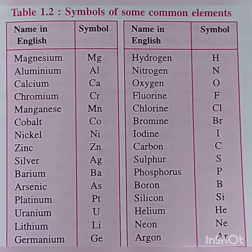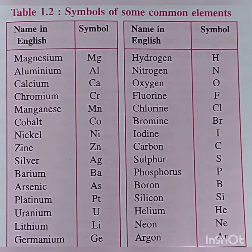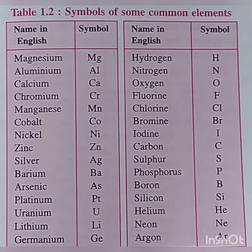Let us see the symbols of some common elements: Magnesium — Mg, Aluminium — Al, Calcium — Ca, Chromium — Cr, and so on. So, what is a symbol? A symbol is the short form that stands for the atom of a specific element, or the abbreviation used for the name of the element. Each element is denoted by a symbol which is usually the first letter of its name in English, Latin, or maybe even German.